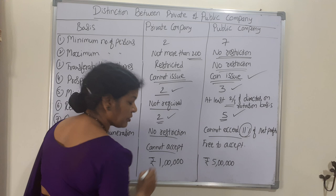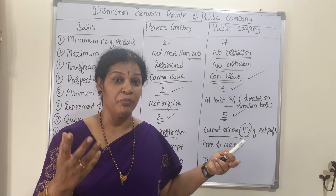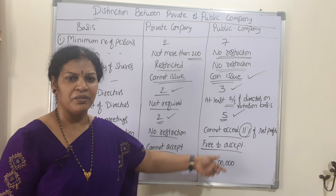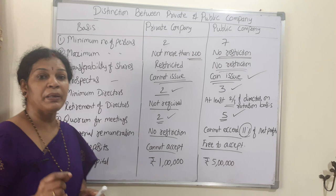Next is public deposits. A private company cannot accept public deposits since it cannot issue shares to the public. A public company can invite the public to purchase shares, so it is free to accept public deposits — this is one of the best qualities of a public company.